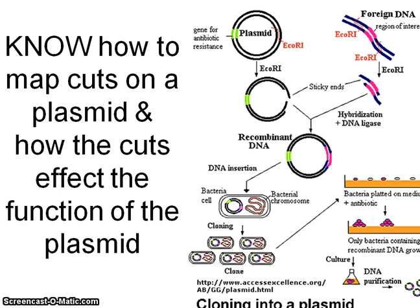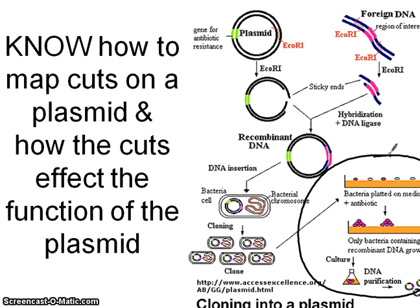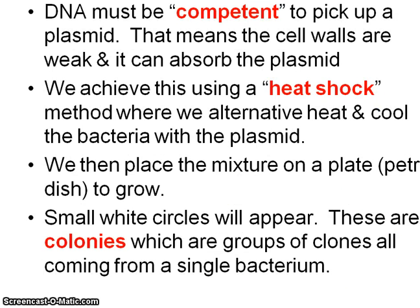Here's another diagram showing the same thing. You need to understand this process and how it works, and you need to understand how we would then turn around and screen this, which is this last step here. In other words, if we create a plasmid that's going to give our bacteria some kind of a new property, and we're interested in just the bacteria that got transformed, we need to find a way to screen them so that only the bacteria we're interested in are the ones that will grow.